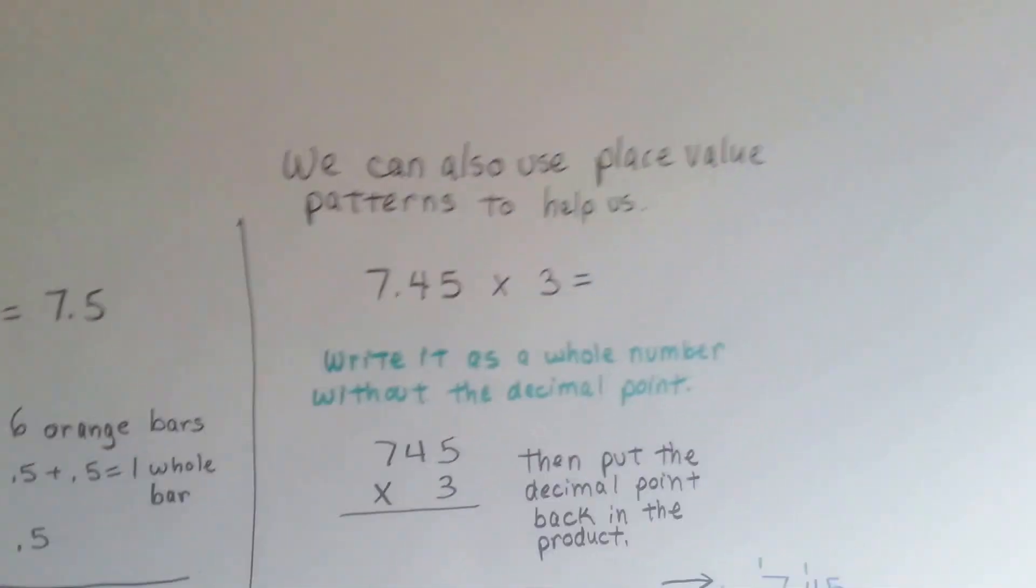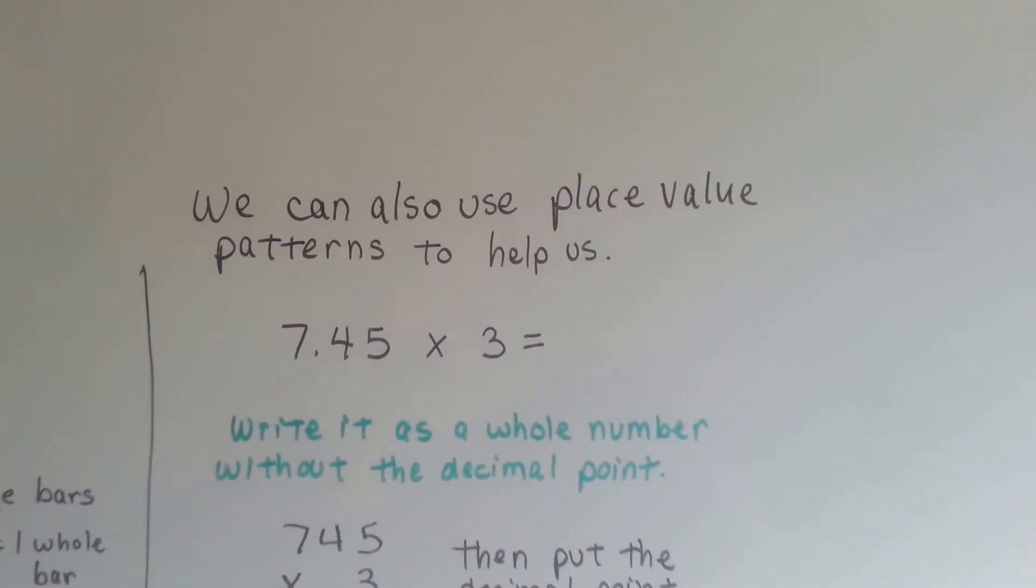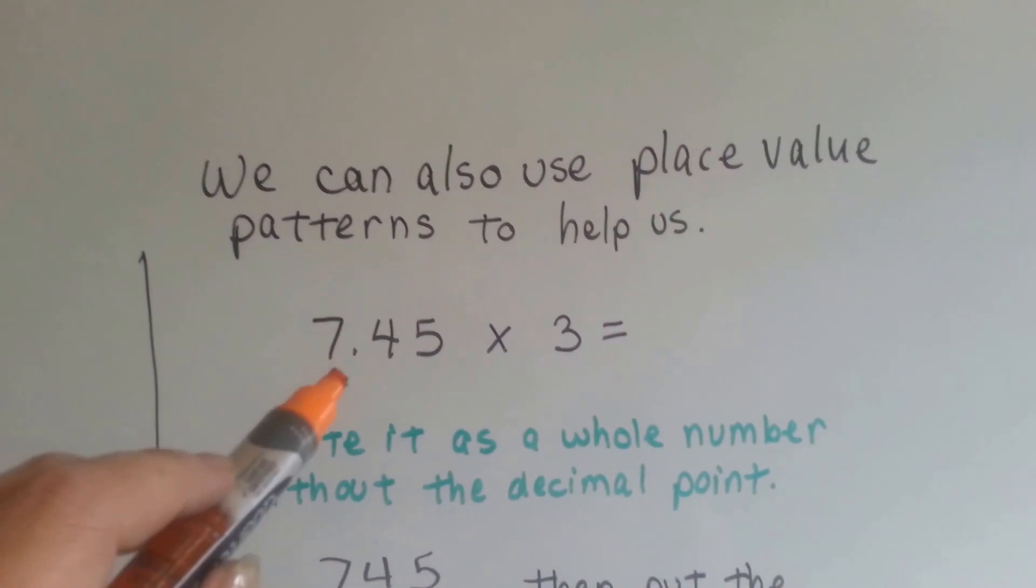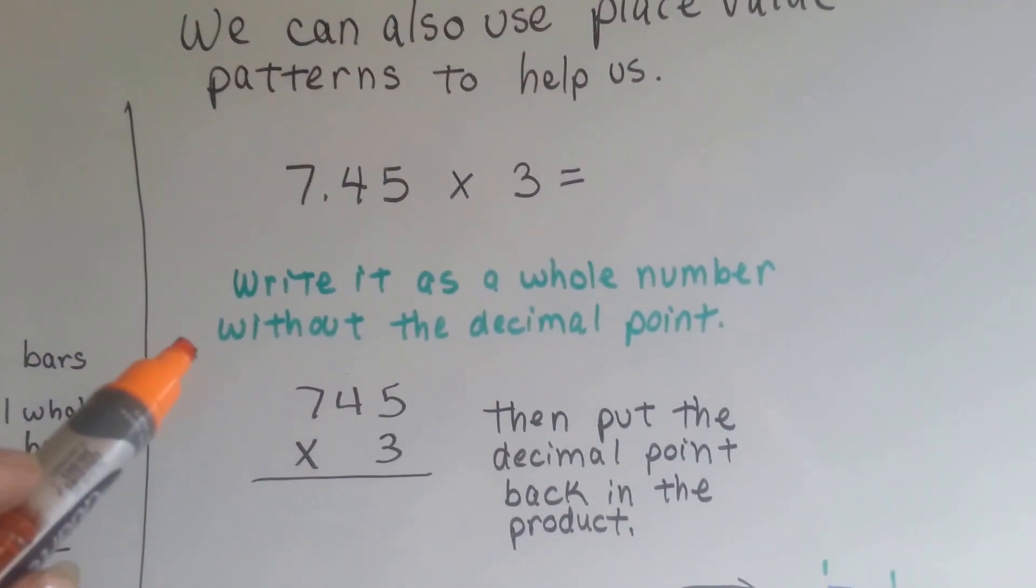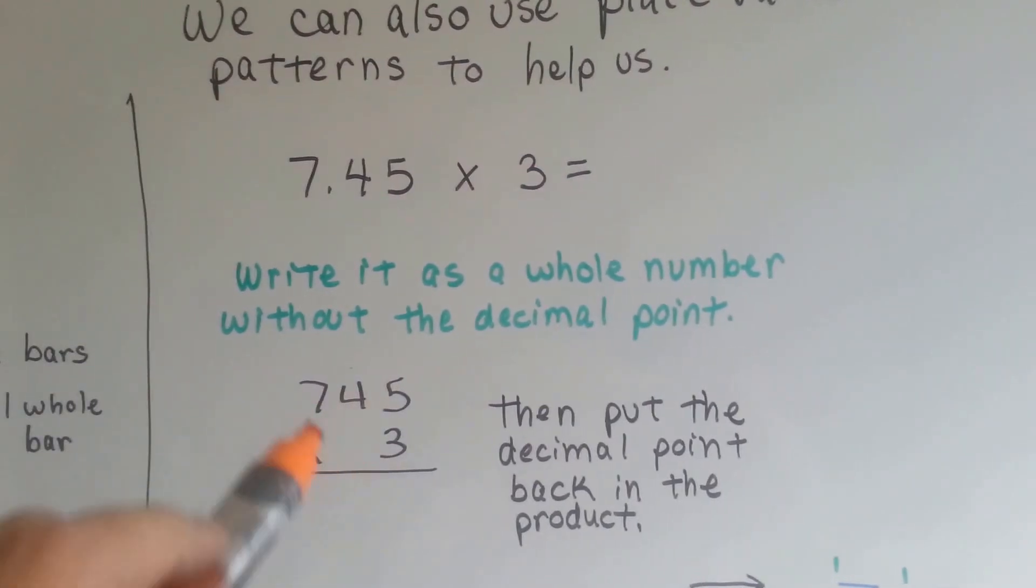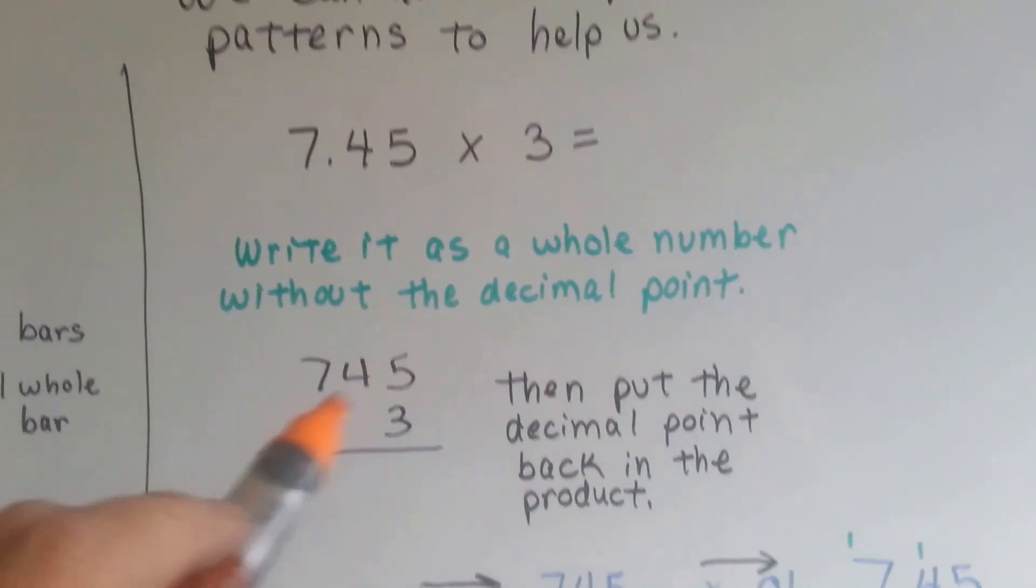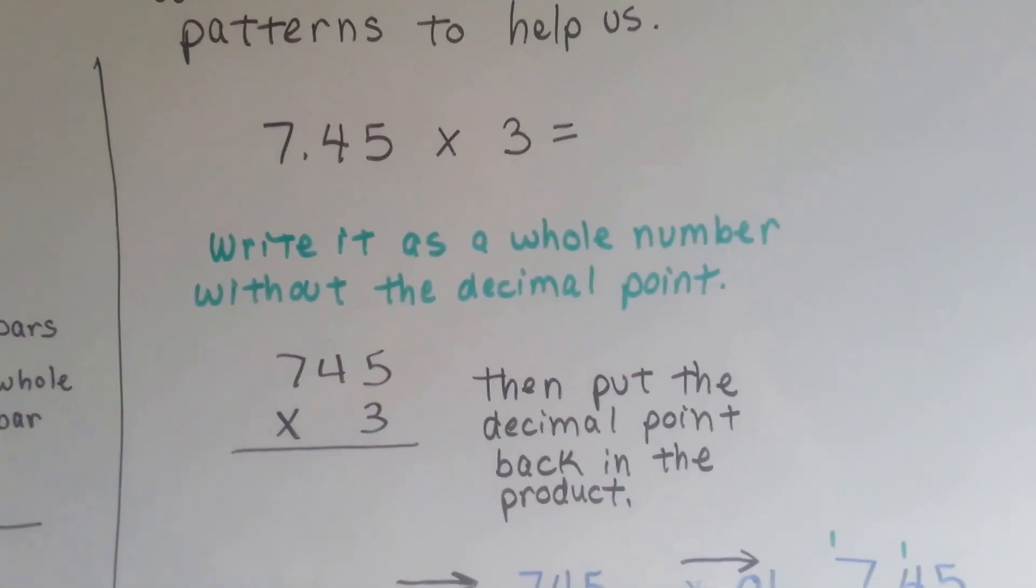We can also use place value patterns to help us. If the problem was 7 and 45 hundredths times 3, we could write it as a whole number without the decimal point, just like this. And then we could do our math and put the decimal point back in when we were finished.